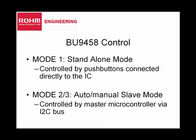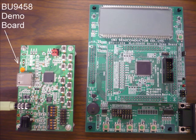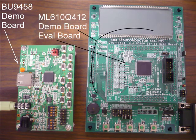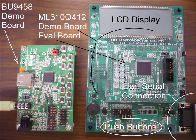We will be using this device in modes 2 and 3 for this demonstration. The board to the left is a demonstration board for the BU9458 Series Media Decoder IC. The board to the right is Oki Semiconductor's ML610Q412 Evaluation Board mounted on top of a demo board, which includes push buttons, an LCD display, UART connection, and other various functions.